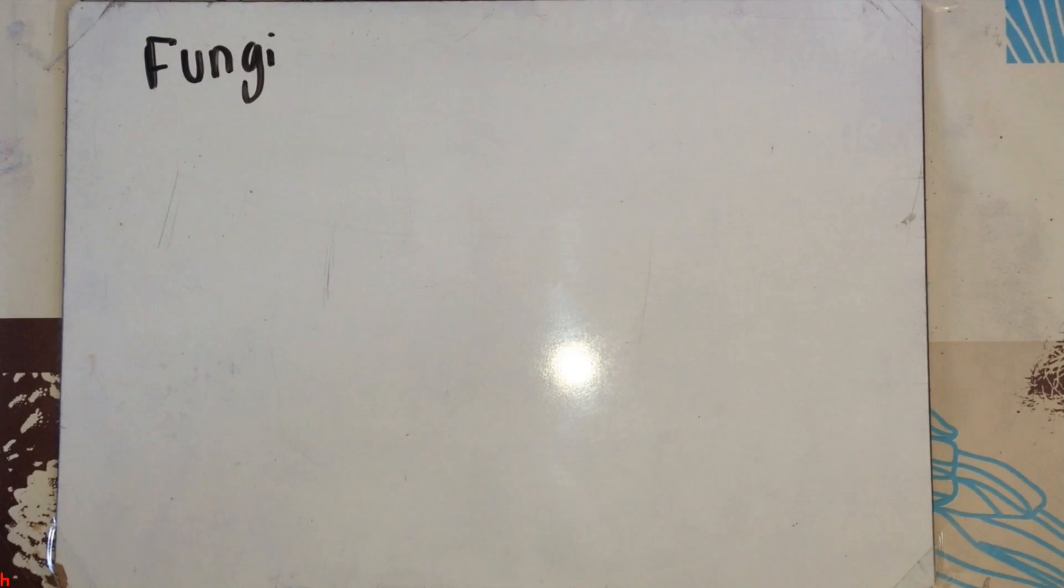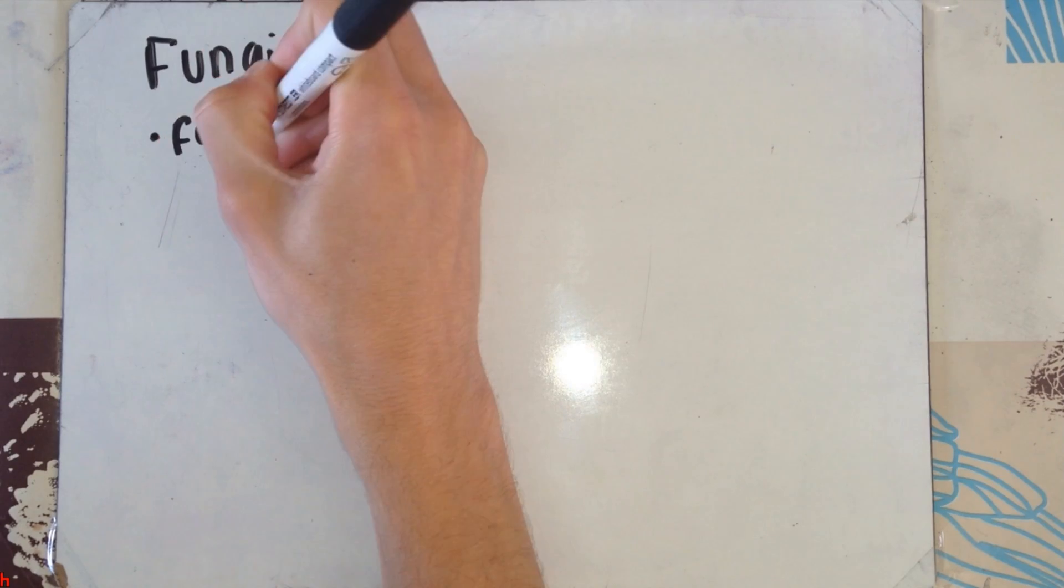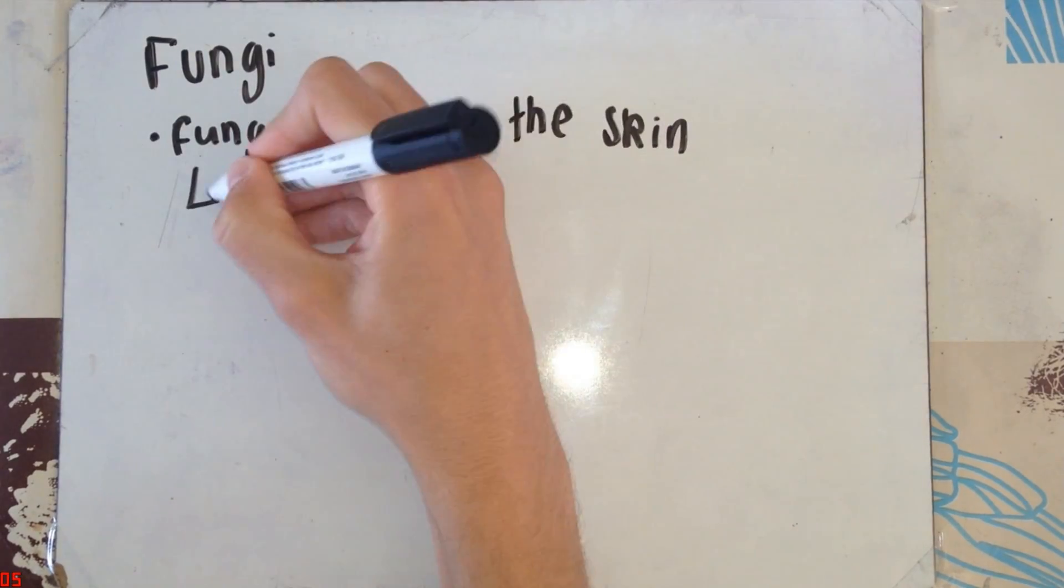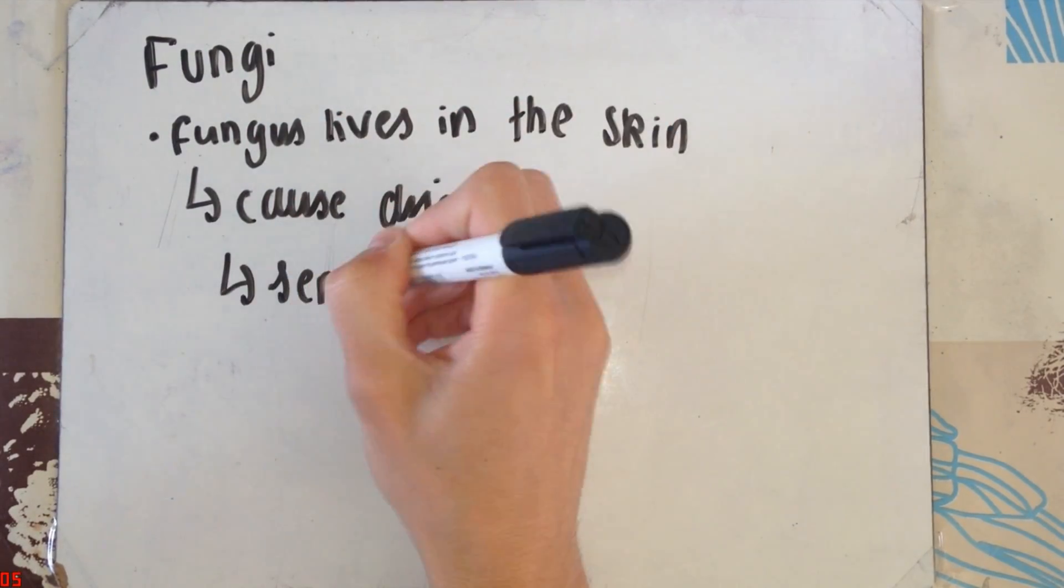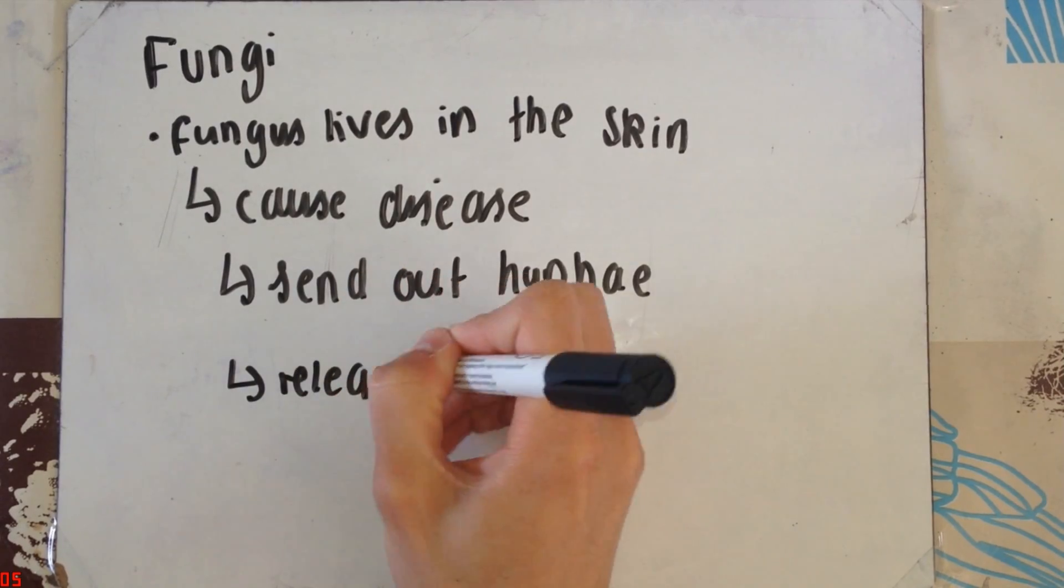Next, we have fungi. Fungi live on and in between the layers of the skin. They also cause disease. They cause irritation and soreness by sending out hyphae. This is how they reproduce. The hyphae then release spores.